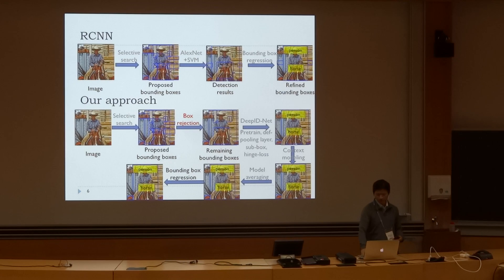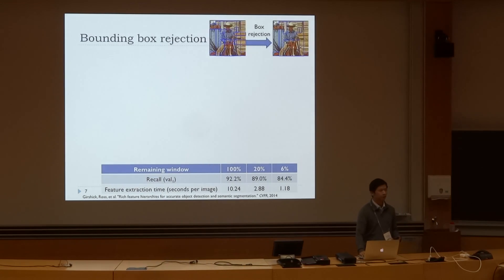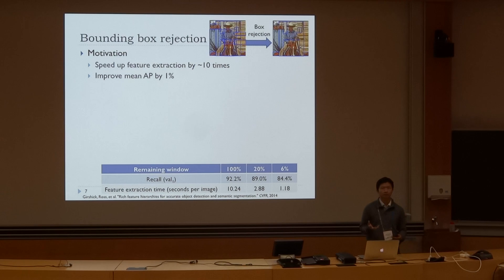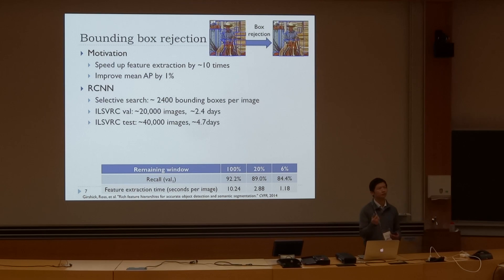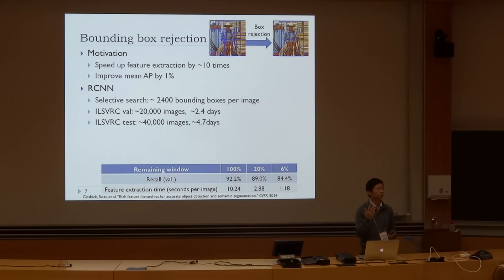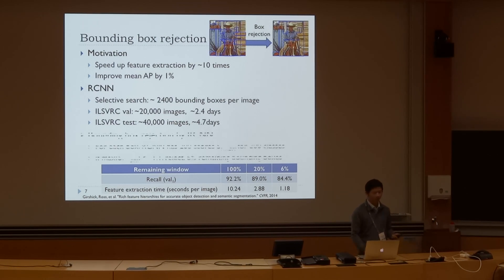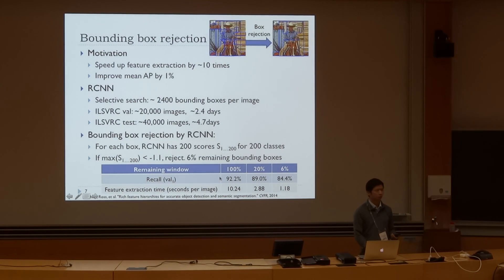For the bounding box projection, the motivation is to speed up the feature extraction procedure, because it takes a very long time to extract features from RCNN and then train the SVM. Therefore, we cascade our RCNN in order to make the training and validation of new models much faster. With this cascade, the time required is reduced from 10 seconds to about just one second.